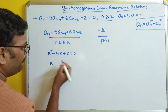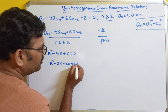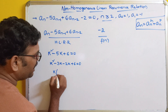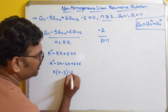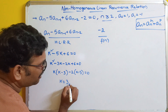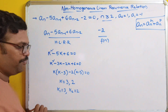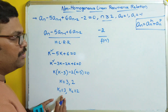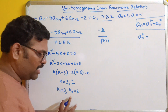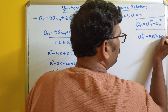Now we find the roots. k² minus 3k minus 2k plus 6 = 0, because adding gives minus 5k and multiplying gives 6k². So k(k minus 3) minus 2(k minus 3) = 0, giving roots k = 3 and k = 2. So k1 = 3 and k2 = 2. Since the roots are distinct, the general solution is a_n_h = A·k1^n + B·k2^n.